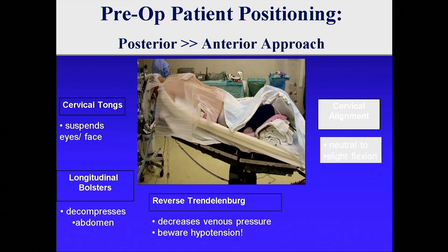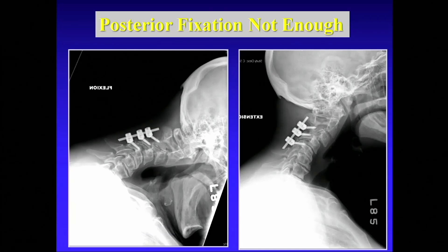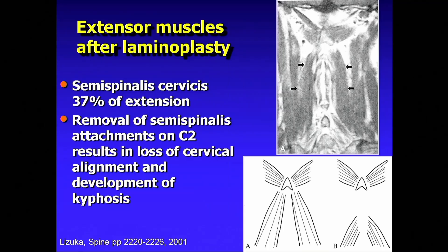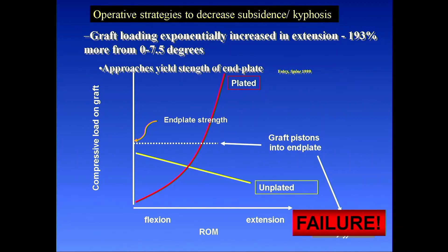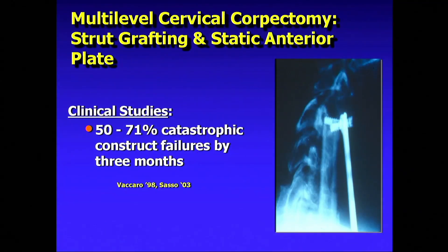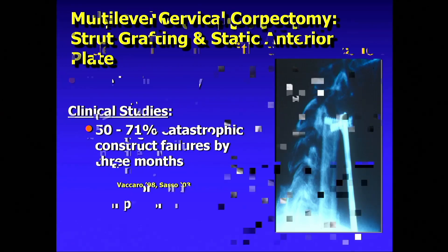Posterior approaches have much more problems with kyphosis than anterior. What I do a lot of times at the end of a posterior procedure is give a little traction to reduce and bring the head back into alignment. This is Dr. Albert's patient — don't fix people in kyphosis. Instrumentation can't overcome every deformity, so be very careful. Plating systems have helped us and do prevent kyphosis. We created a lot of kyphosis in the old days with our corpectomies.